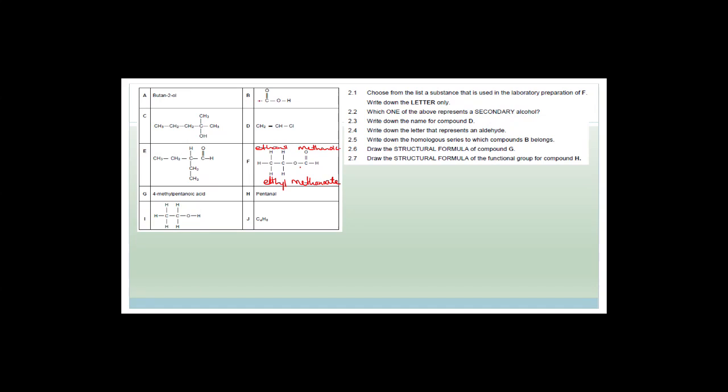I know this is a carboxylic acid functional group — C double-bonded O, OH — but that doesn't mean it's methanoic acid because there's a little line here, and that line means it could be a C or an H. If it was an H, then yes, it'd be methanoic acid. But this little line tells you there's other stuff there. Butan-2-ol is none of those two. The answer is I — the letter is I. I is ethanol.